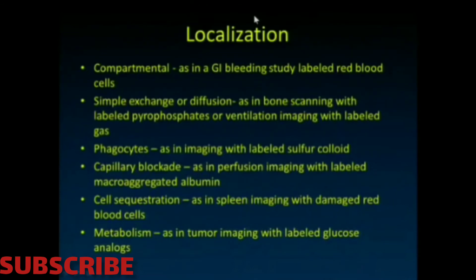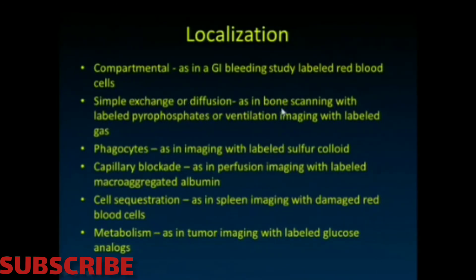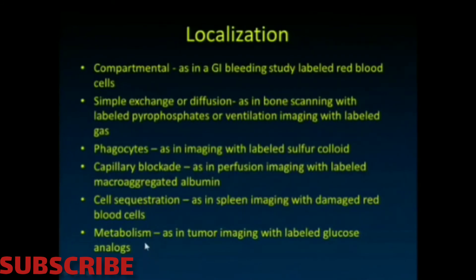The localization of radiopharmaceuticals works through many different mechanisms. Sometimes we're looking at compartmental localization, like in a GI bleeding study where we label red blood cells to see whether they stay in the bloodstream or dump into the gastrointestinal tract. Sometimes we image simple exchange or diffusion, as in radionuclide bone scanning with MDP or ventilation imaging with labeled gas. Sometimes we image phagocytosis with sulfur colloid, capillary blockade with labeled macroaggregated albumin, cell sequestration, or metabolism using glucose analogs like F-18 FDG PET imaging.